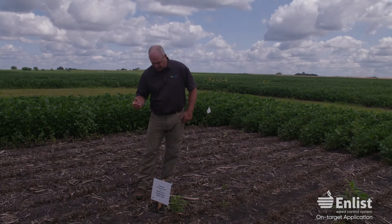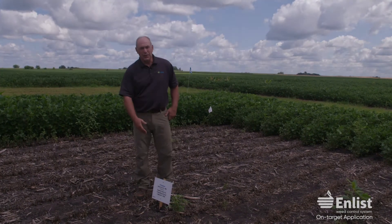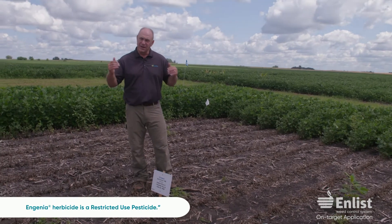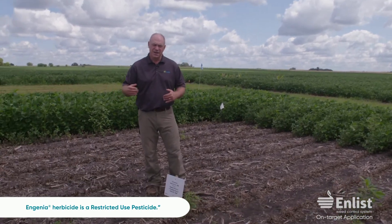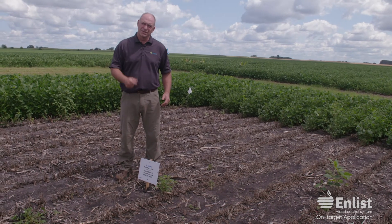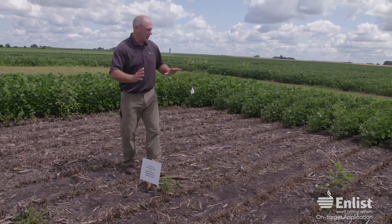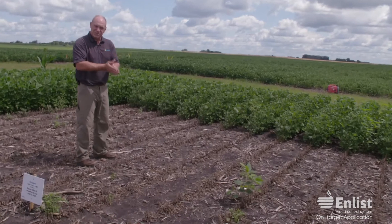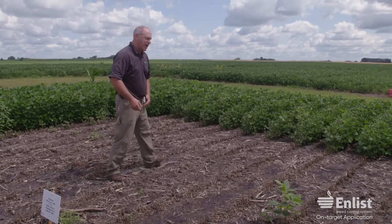So over here we have E3 soybeans sprayed with dicamba — specifically Engenia sprayed on E3 beans. As you know, Xtend beans do not have 2,4-D tolerance, and E3 beans do not have dicamba tolerance. There's no cross-tolerance. But we sprayed this — wind was out of the west at seven miles an hour — and remember on the 2,4-D we had that sharp line where the symptomology just stopped.